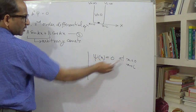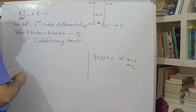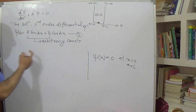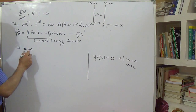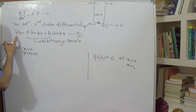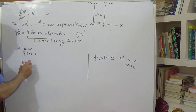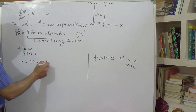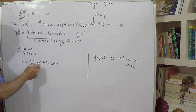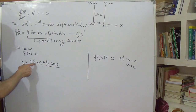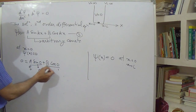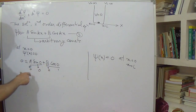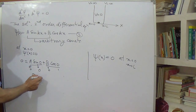Our wave function ψ(x) = 0 when x=0 and also at x=L. Applying the first boundary condition at x=0: ψ(0) = A·sin(0) + B·cos(0) = 0. Since sin(0)=0 and cos(0)=1, this gives B=0. So we conclude that the constant B equals zero.